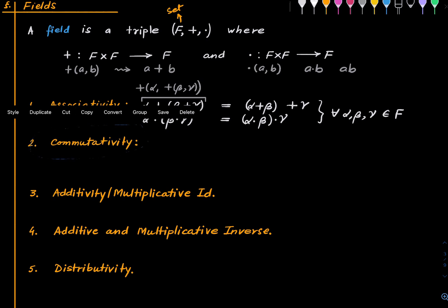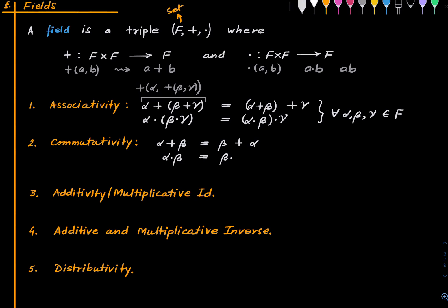Next we have commutativity, meaning α + β = β + α and α · β = β · α for all α and β in F.